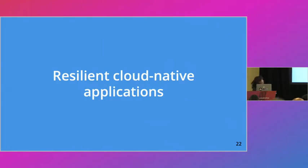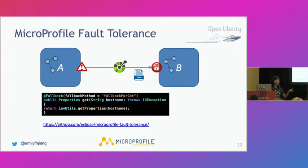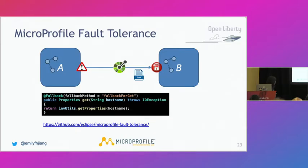How do you create resilient microservices? We use MicroProfile Fault Tolerance. You can add retry capability, timeout, circuit breaker, bulkhead to limit concurrent requests, and fallback. The fallback specifies an alternative method that can be invoked to return a good response if the primary method fails. Each slide has URLs pointing directly to the MicroProfile repository for more details.